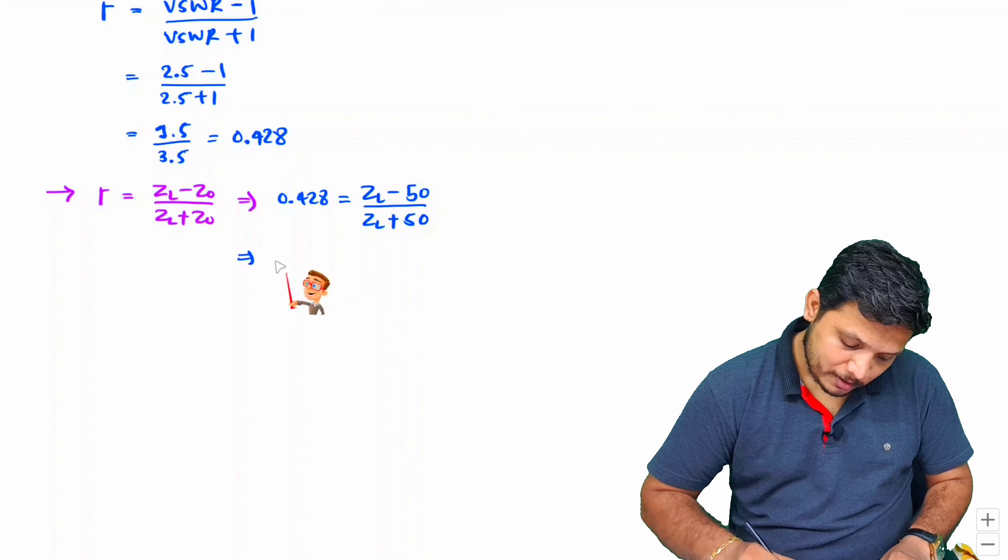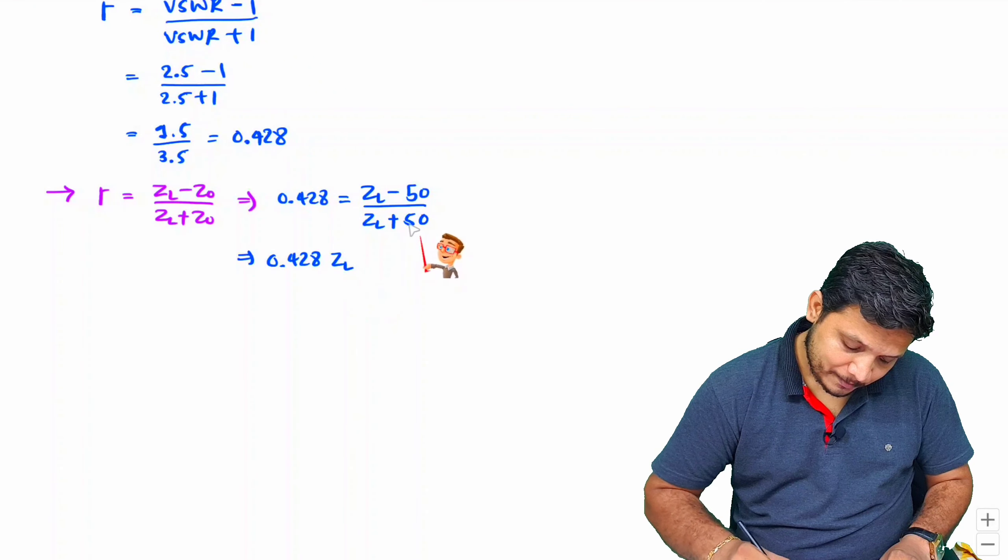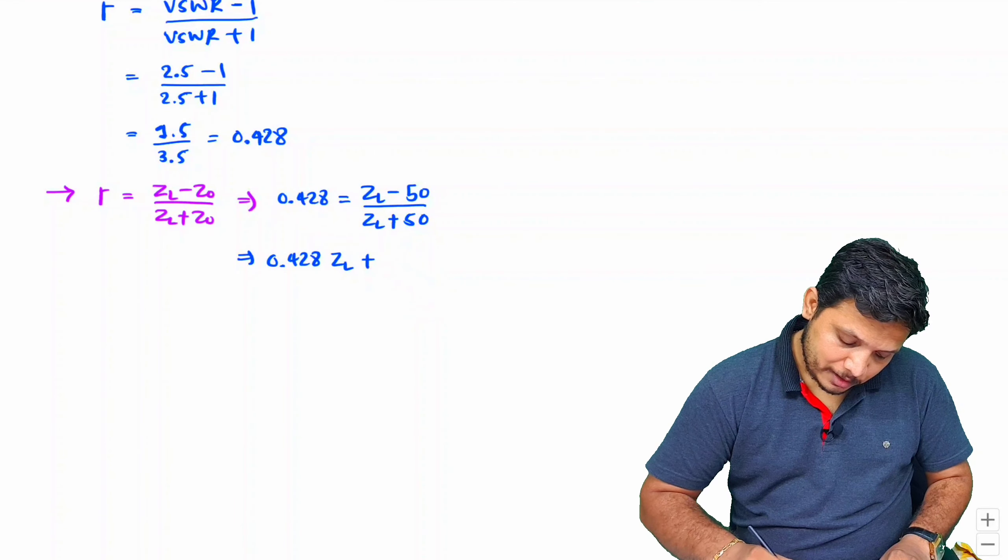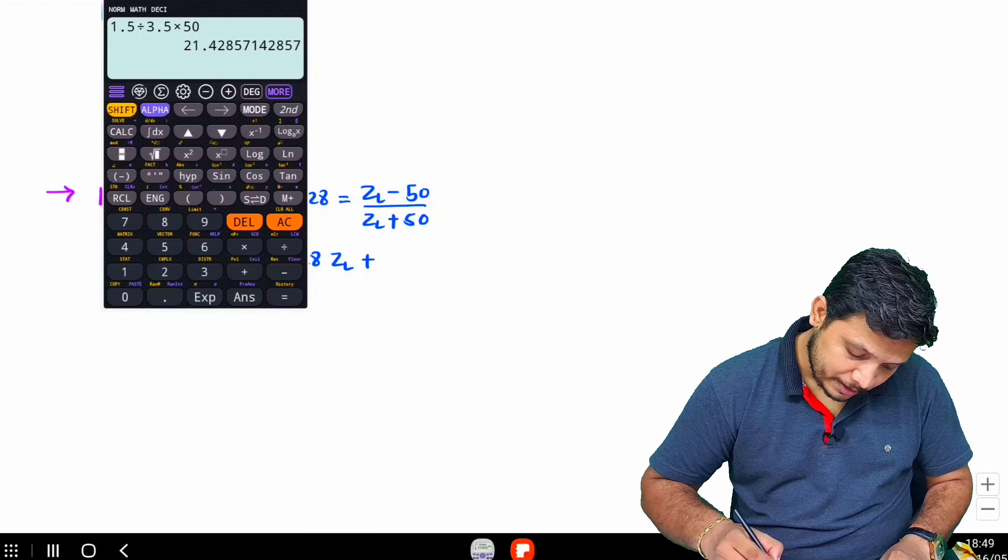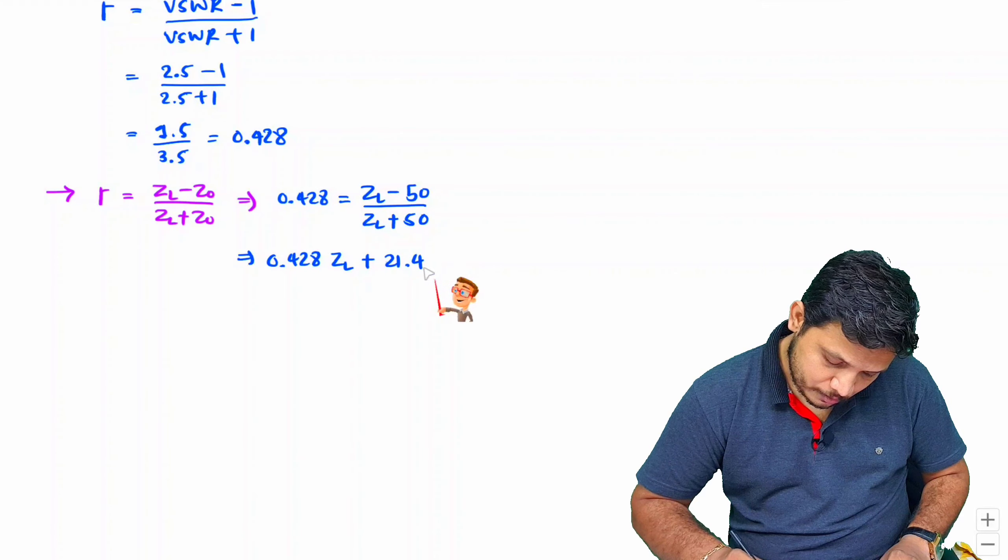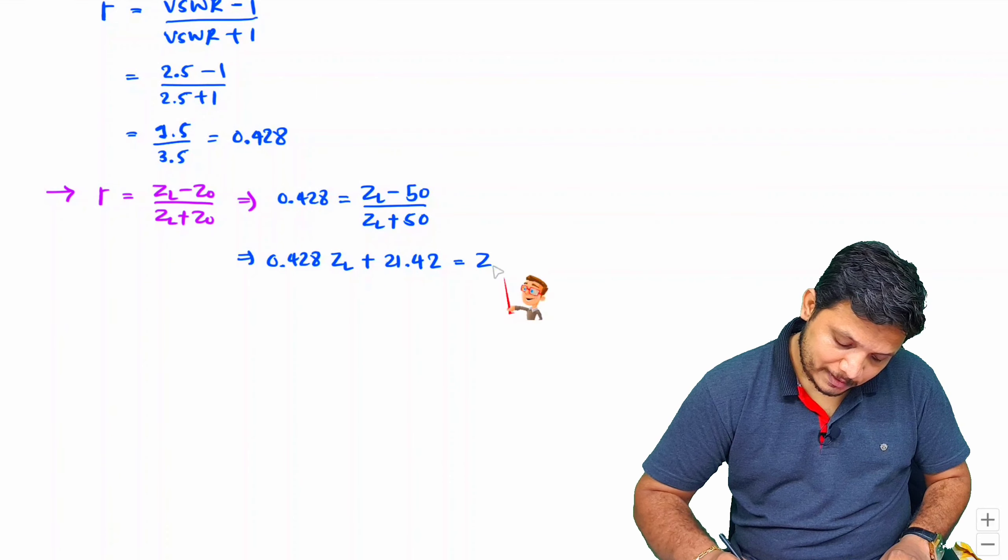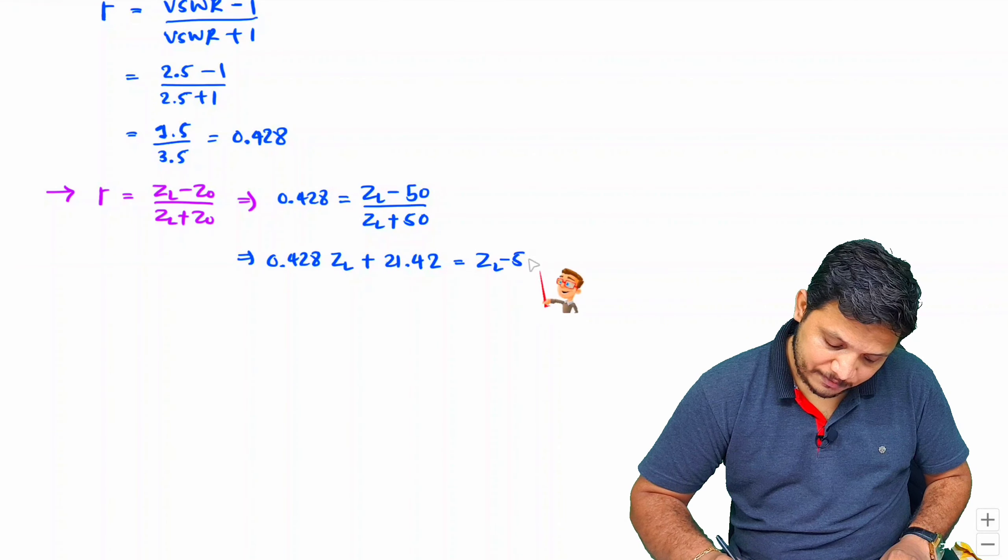So 50 divided by ZL plus Z0, which is 50. We can have 0.428 times ZL and 50 into this, which is 21.42 equals ZL minus Z0, which is 50.